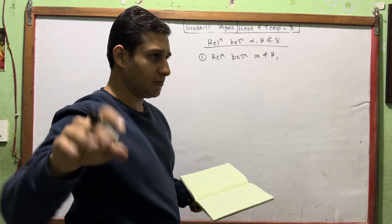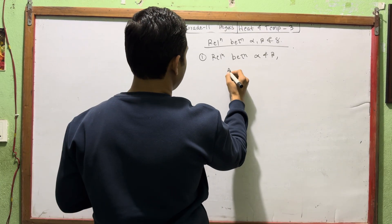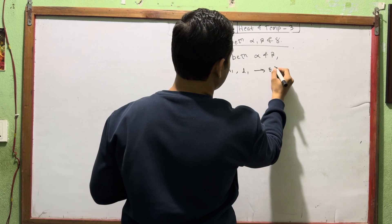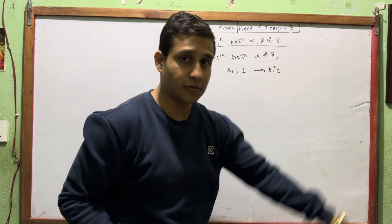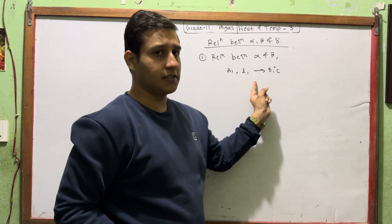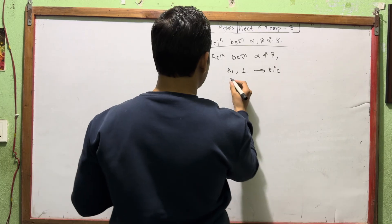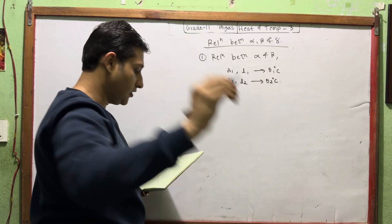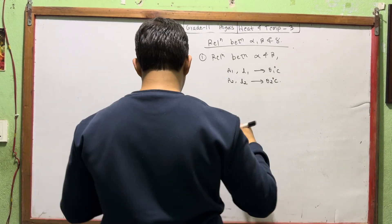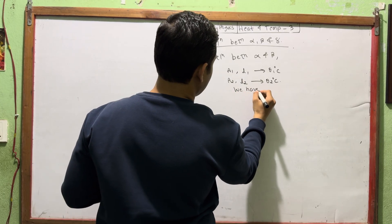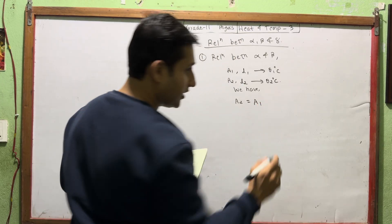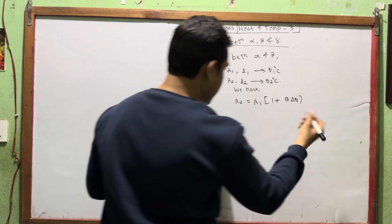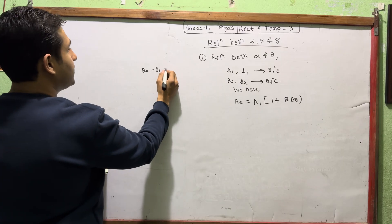What is the relationship between alpha and beta? This is the area expansion formula. A2 is equal to A1 times 1 plus beta del theta, where del theta is theta 2 minus theta 1.